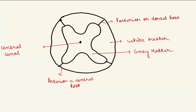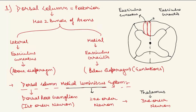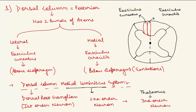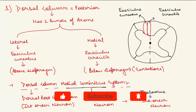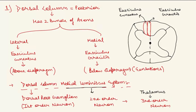The first tract we will understand is the dorsal column, discussed under the topic of the dorsal column medial lemniscus system. In the dorsal area, we have two groups of bundles of axons: one is the medial group known as fasciculus gracilis, and the other is the lateral group known as fasciculus cuneatus.